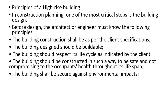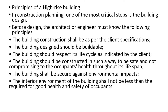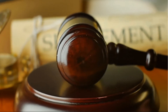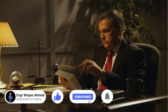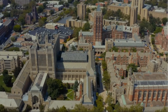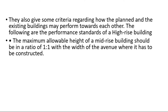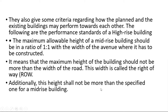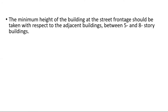The building should be secure against environmental impact. The interior environment of buildings shall not be less than the required standard for good health and safety performance of a high-rise building. Construction planning of high-rise buildings shall be done as per the regulations or standards provided by the authority in charge. These standards are based on best practices and principles guiding mid-rise and high-rise building design, ensuring they are responsive to their existing as well as planned context. The maximum allowable height of a high-rise building should be in a ratio of 1:1 with the width of the avenue where it is to be constructed — meaning the maximum height should not exceed the width of the road.